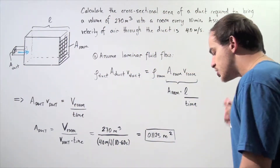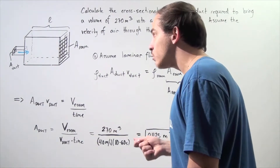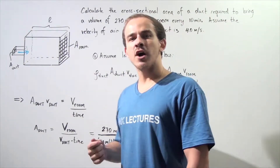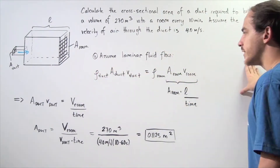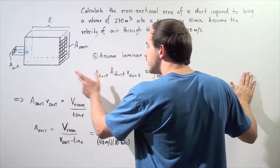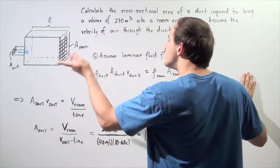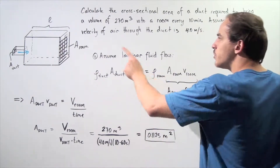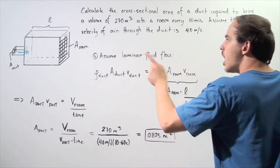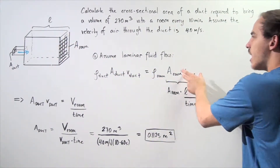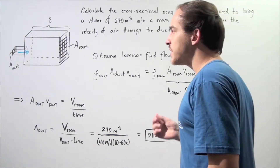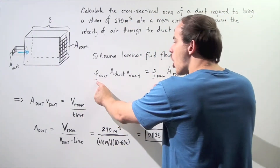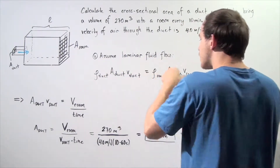Let's begin by assuming that the air within the room and the duct is under laminar flow. That means we can apply the equation of continuity, which states that the density of air within the duct multiplied by the cross-sectional area of the duct multiplied by the velocity of air within the duct equals the product of the density of air within the room, the cross-sectional area of the room, and the velocity of air within the room. Since the densities are identical, we can cancel them out.